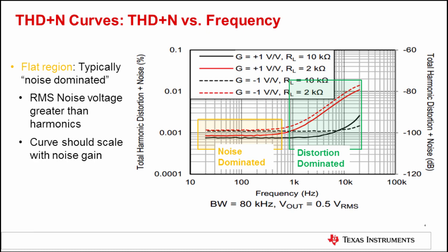Looking at this curve, you can see two distinct regions. On the left-hand side is a flat, low-frequency region that is noise-dominated. In this region, the RMS noise voltage of the circuit is greater than the RMS voltage of all the harmonics summed together. The reason this region is flat is that noise doesn't change with an input fundamental. For example, the RMS noise of the circuit at 20 hertz is the same as the RMS noise at 100 hertz and 500 hertz, and so on. This is why if noise is dominating the measurement, the THD plus N stays flat as frequency increases.